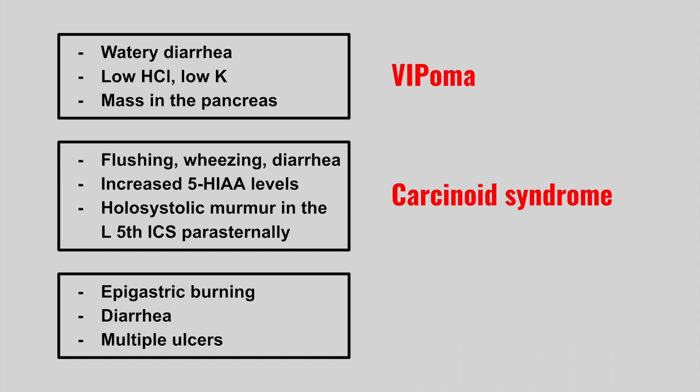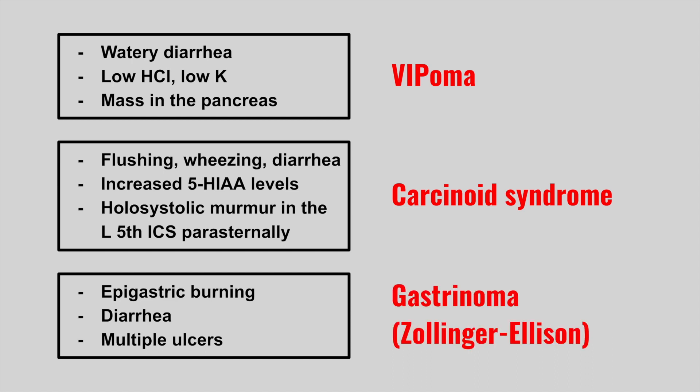The next patient has epigastric burning, diarrhea, and multiple ulcers. This is called a gastrinoma, or Zollinger-Ellison syndrome.